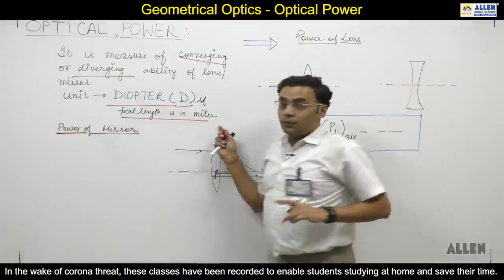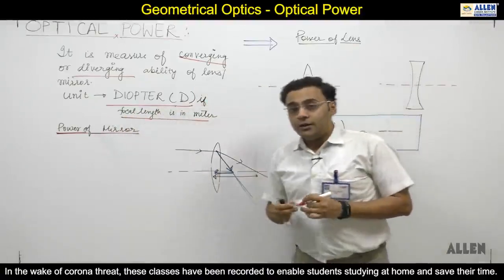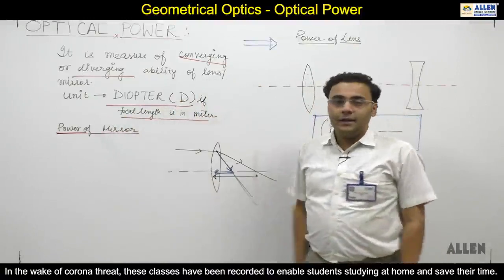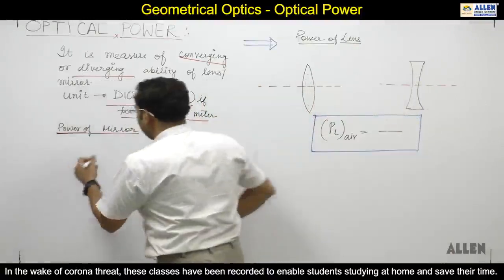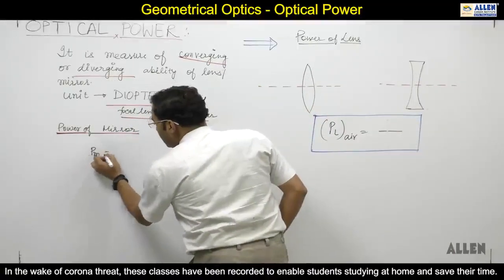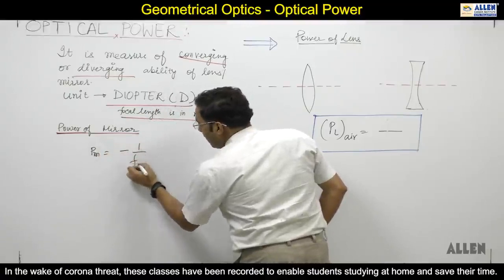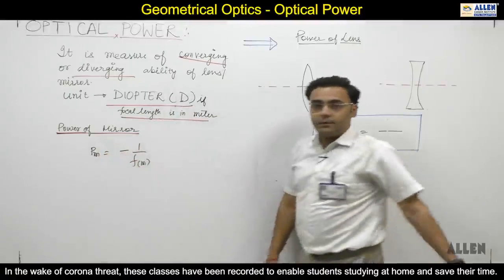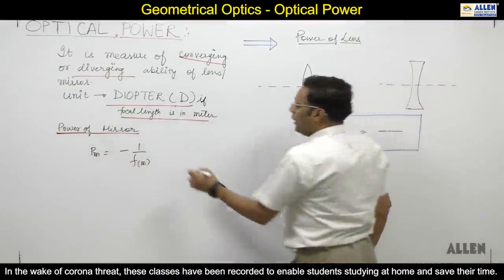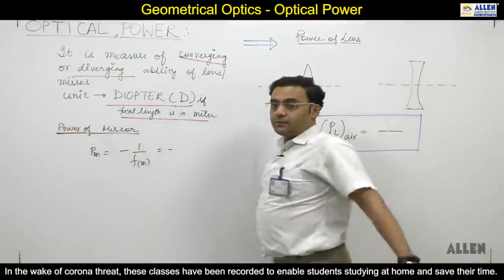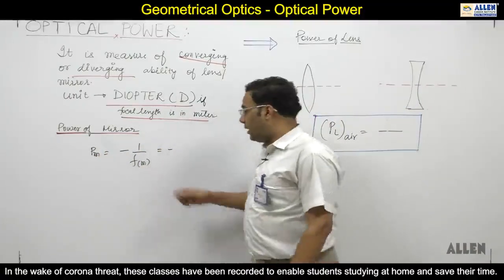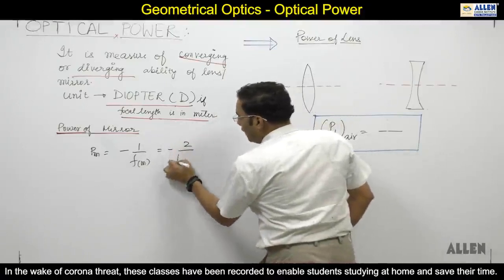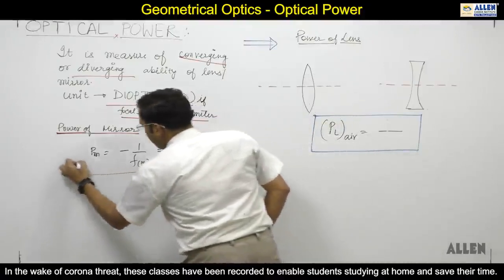The unit of the diopter has symbol capital D. Power of mirror, Pm, is minus 1 by f, where f is in meters. Clear? And you know that for a mirror, the focal length is R by 2, so this is minus 2 by R meters. This is the power formula for a mirror.